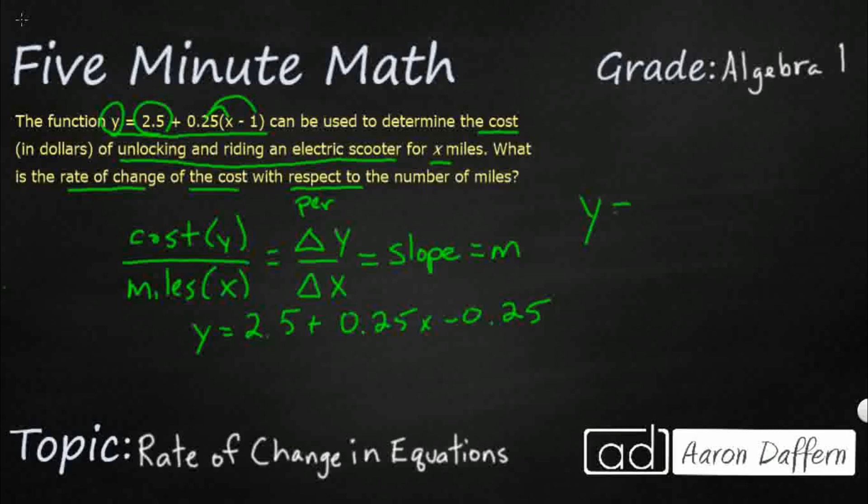0.25x minus 0.25. So if we wanted to put it into our slope-intercept form, y equals mx plus b, let's get that 0.25x up front. We've got 2.5 minus 0.25, so that's going to be plus 2.25.